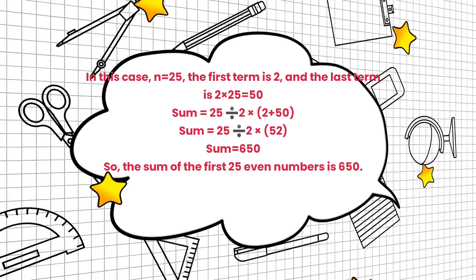Sum equals 25 divide 2 times 52. Sum equals 650. So, the sum of the first 25 even numbers is 650.